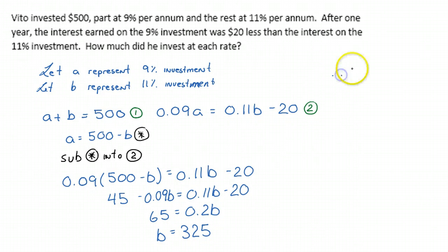So therefore, if B is equal to $325, that means that A is equal to 500 minus 325. So A is going to equal $175.